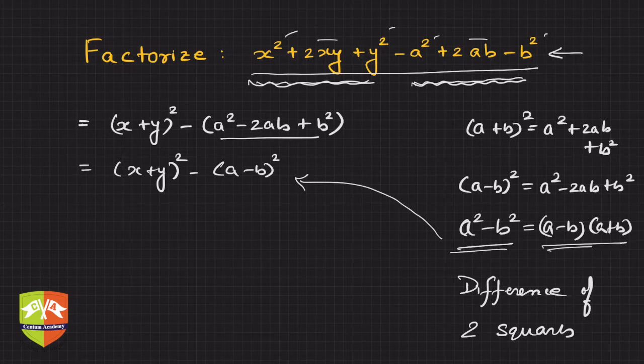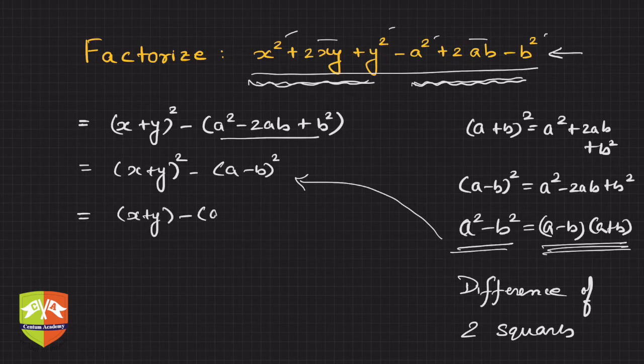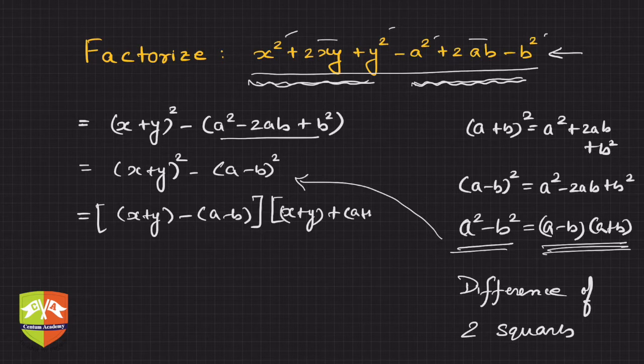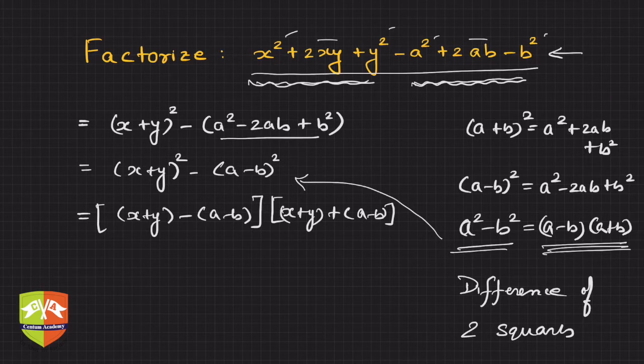So my friends, you can write this as (x + y - a - b)—so this is the a minus b form—and the other term will be (x + y + a)... plus... sorry, not a plus... (a - b). So these are the two factors.